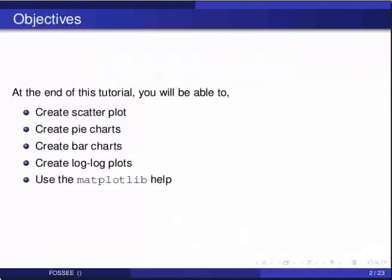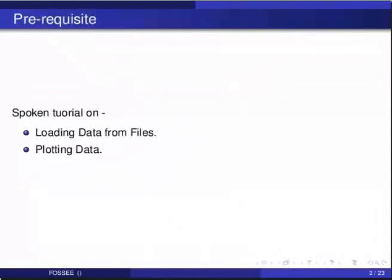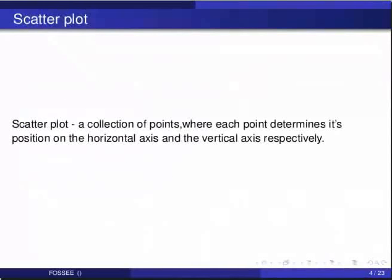We will also use the matplotlib help. Let us begin with the scatter plot. Before beginning this tutorial we would suggest you to complete the tutorial on loading data from files and plotting data. In a scatter plot, the data is displayed as a collection of points where each point determines its position on the horizontal axis and the vertical axis respectively. This kind of plot is also called a scatter chart, a scatter diagram or a scatter graph.